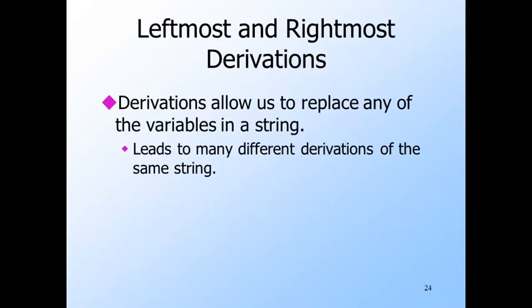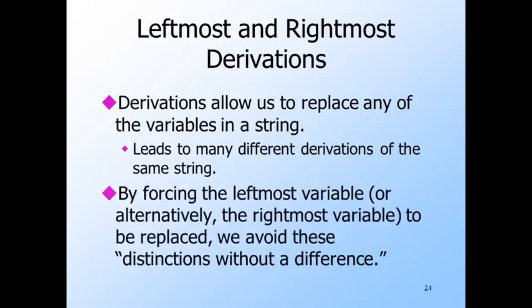When a sentential form has a number of variables, we can replace any one of them at any step, and what string of terminals a variable ultimately gets replaced by is independent of what else is in the sentential form — that's actually where the term "context-free" comes from. As a result, we have many different derivations of the same string of terminals. We can restore some order by requiring that a particular variable be replaced at each step. One reasonable rule is to require that the leftmost variable be replaced at each step — these are called leftmost derivations. Similarly, we could require the rightmost variable be replaced at each step, giving us rightmost derivations.